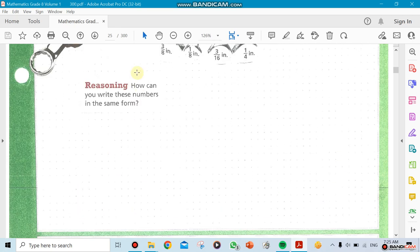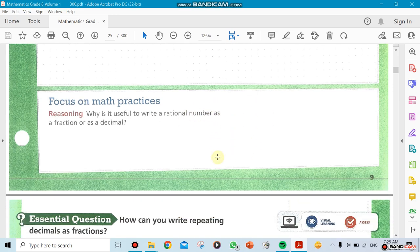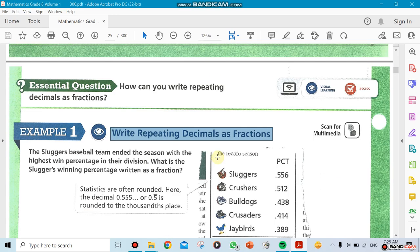We have a question: why is it useful to write a rational number as a fraction or as a decimal? We need to know what's the benefit of doing that. Why do we need to do this? We need to learn how to switch from fraction to decimals and from decimals to fractions. This is the idea here.